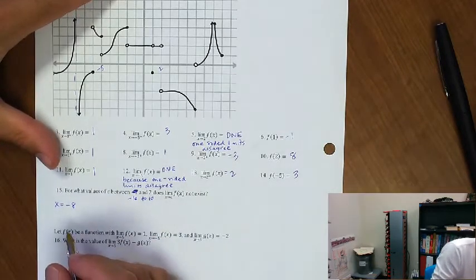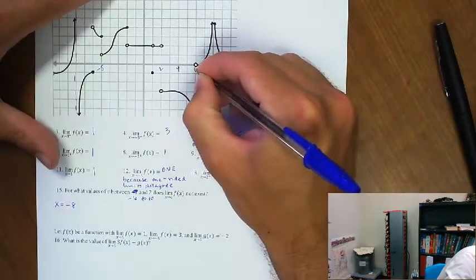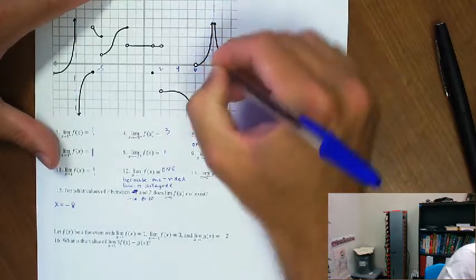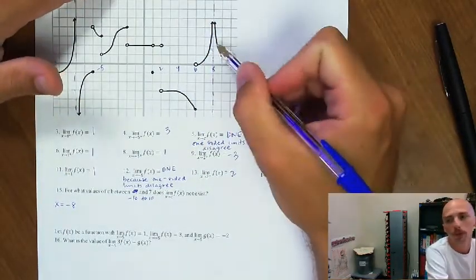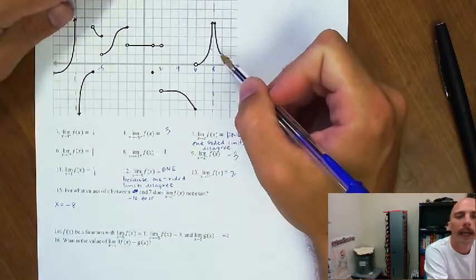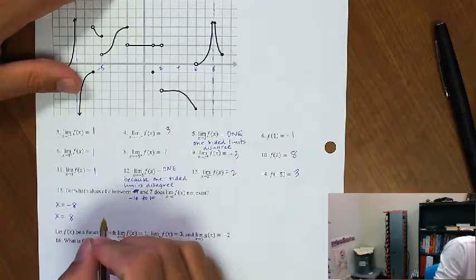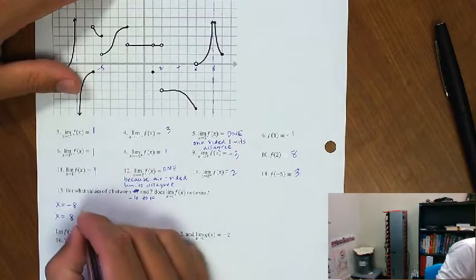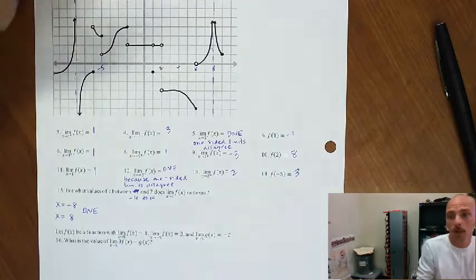There's also a vertical asymptote around x equals 8 — they're together around it, but clearly both going to infinity. So x equals 8 also: the limit doesn't exist because of an infinite discontinuity, or you could call it a vertical asymptote.